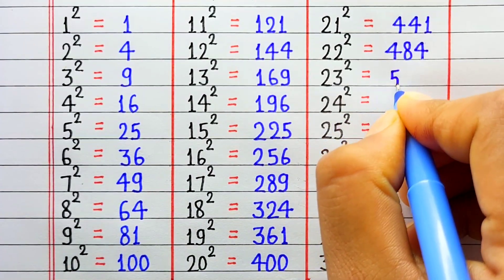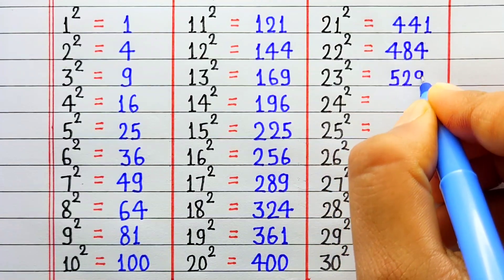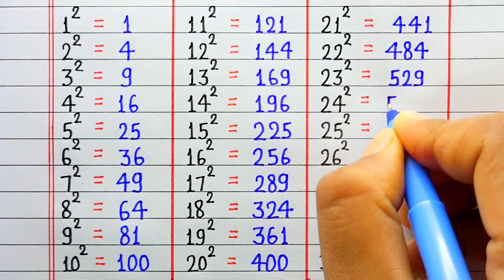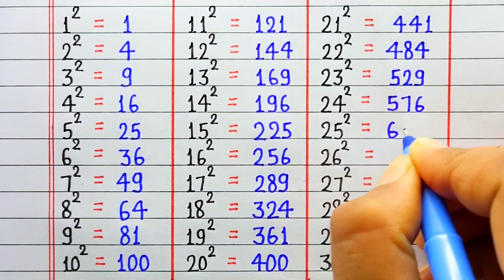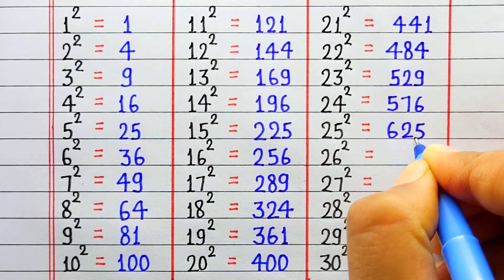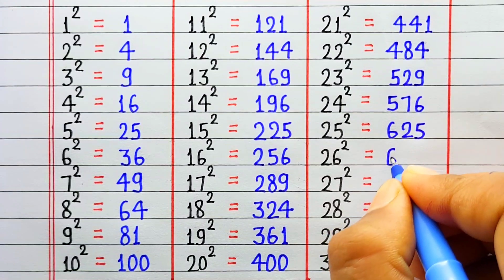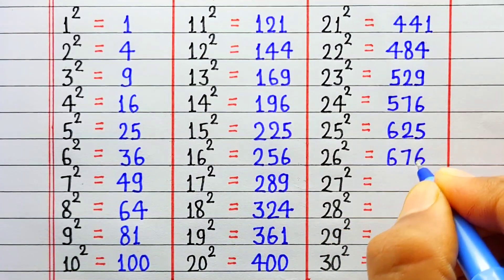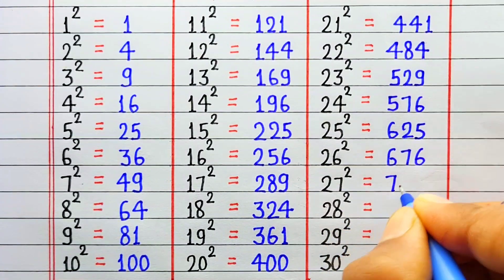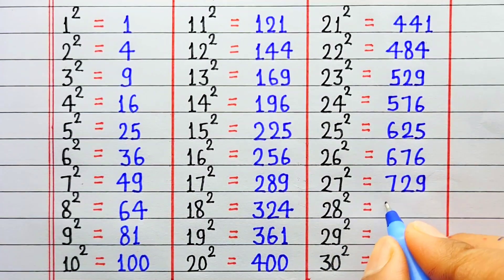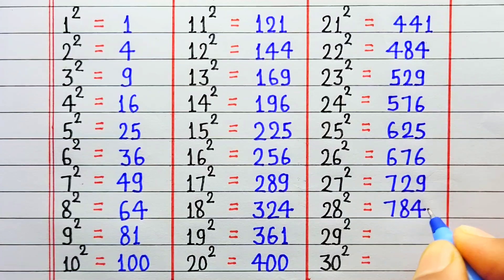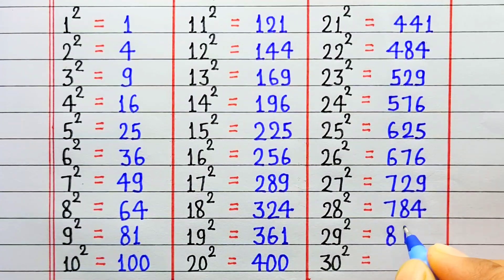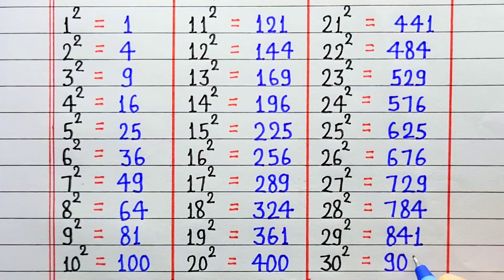Square of 23 is 529. Square of 24 is 576. Square of 25 is 625. Square of 26 is 676. Square of 27 is 729. Square of 28 is 784. Square of 29 is 841. Square of 30 is 900.